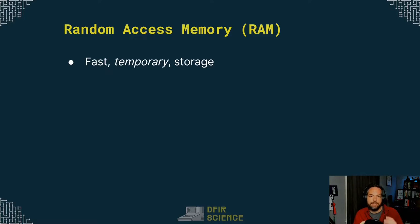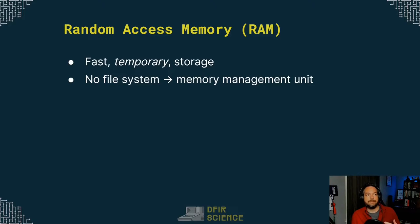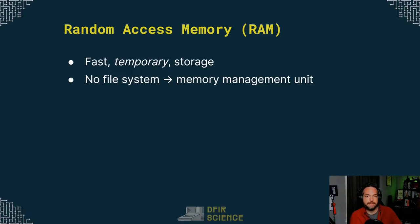What we're focusing on today is random access memory — the fast temporary storage. Now, there is no file system in RAM. It's all controlled by something called a memory management unit. For our analysis we don't really have to care too much about how RAM is managed, but we do need to think about how it's different from a hard drive. If you've done hard drive investigations, you've most likely collected an image of the hard drive, looked at a partition, and found a file system. Well, RAM doesn't have a file system. The memory management unit — basically the operating system — keeps track of where all the data is in memory.